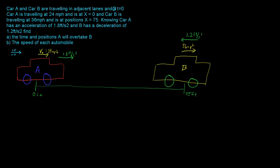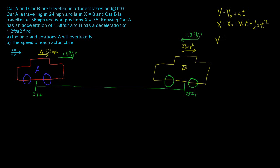To find the time and position at which A will overtake B, we use our kinematic equations. The velocity equals initial velocity plus acceleration times time. Position x equals initial position plus initial velocity times time plus one-half times acceleration times t squared. And final velocity squared equals initial velocity squared plus two times acceleration times the change in distance, which is final x minus initial x.